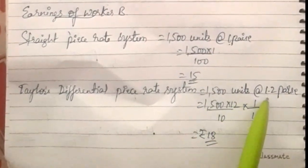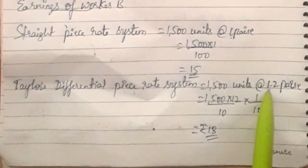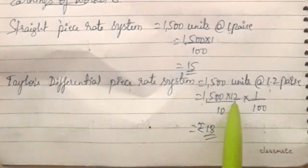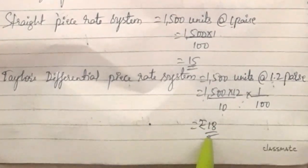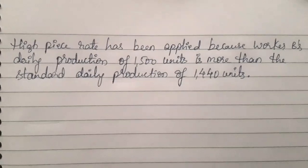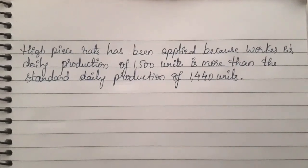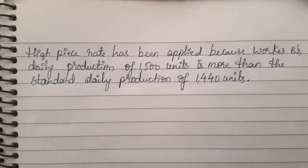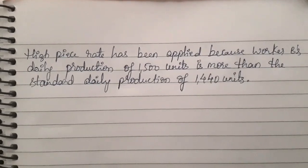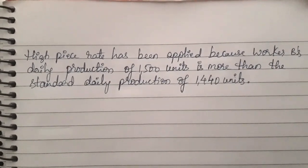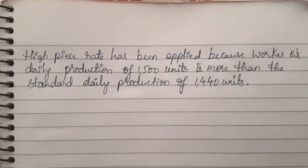Under Taylor's differential piece rate system, worker B is above standard, so the high piece rate of 1.2 paise applies. Earnings = 1500 × 12 ÷ 10 × 1 ÷ 100 = rupees 18. The high piece rate is applied because worker B's daily production of 1500 units is more than the standard daily production of 1440 units.